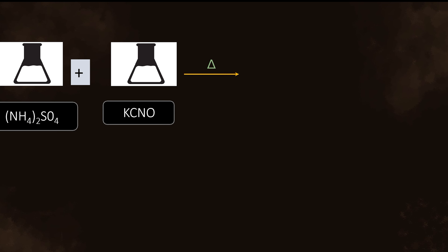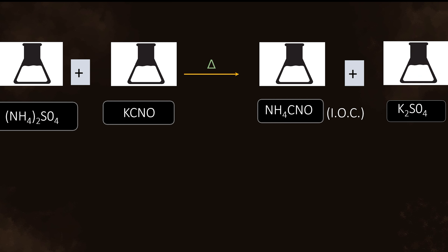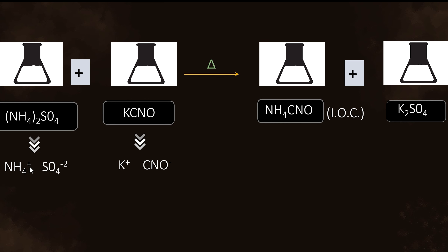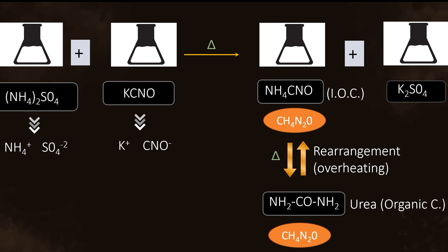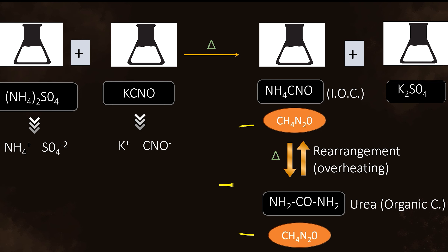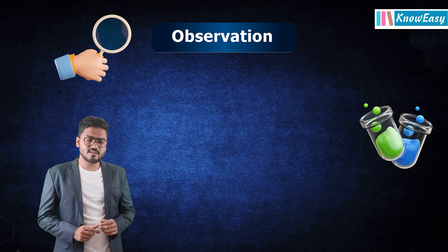In the presence of heat, he got two compounds: one was ammonium cyanate, which is an inorganic compound, and one was ammonium sulfate. So NH4+ and CNO− ions rearranged — NH4+ combined with CNO− to give ammonium cyanate, and upon overheating, a rearrangement occurred and urea was obtained, which is an organic compound. Compounds which have the same molecular formula but different structural formulas are called isomers.